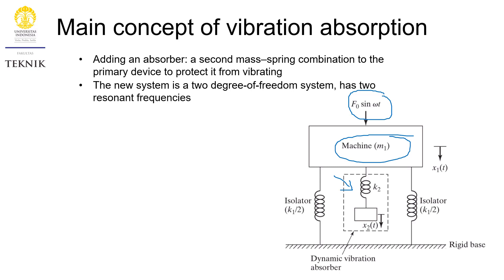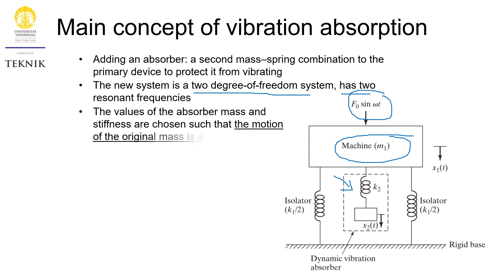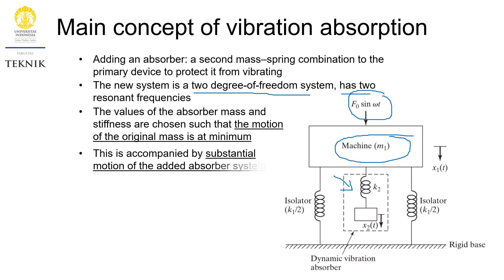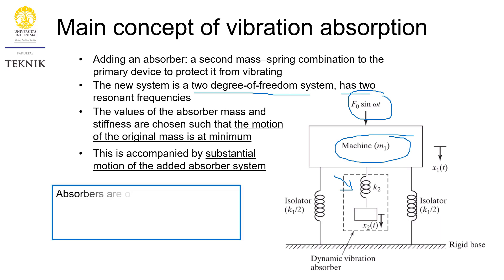There are several things you need to understand about this. Because we add a new mass-spring system, our system becomes a two-degree-of-freedom system, and consequently it has two resonant frequencies as well. The values of the absorber mass and stiffness need to be designed such that the motion of m1 is at minimum, at the sacrifice of the motion of m2. We do not really care if m2 is vibrating too much — what we care about is to make sure that m1 is not vibrating too much. This concept is mainly found in machines that run at constant speed, such as compactors, motors, etc.